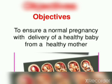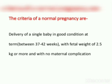The main objective is to ensure a normal pregnancy with delivery of a healthy baby from a healthy mother. Criteria for a normal pregnancy include: delivery of a single baby in good condition at term — that is, between 37 to 42 weeks — with a fetal weight of normally 2.5 kg, and with no maternal complications.